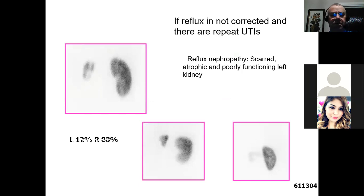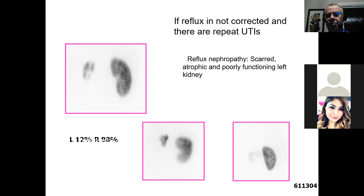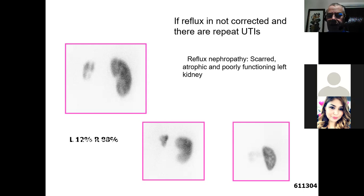If reflux isn't corrected it tends to get worse. This is the end result of reflux not being corrected with repeat UTIs: the left kidney is very small and shrunken with only 12% of total renal function. Once divided function drops below 15%, that kidney will start producing a lot of renin, resulting in the patient getting hypertension. That kidney needs to come out. Between 15 and 20% it's more equivocal, but the kidney is never going to recover and could cause problems.